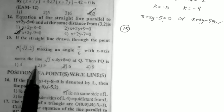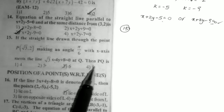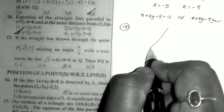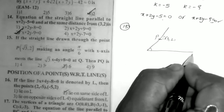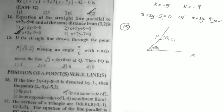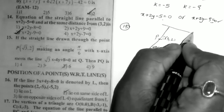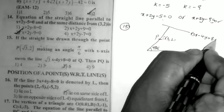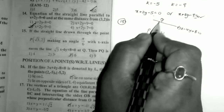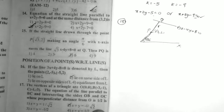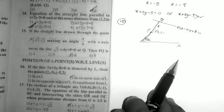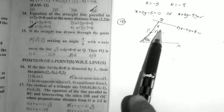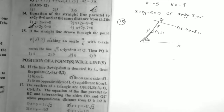Problem 15: A straight line drawn through the point P(√3, 2) makes an angle π/6 with the x-axis and meets the line √3x − 4y + 8 = 0 at point Q. Find the distance PQ. Let the distance PQ = r. The coordinates of Q can be found using the formula: Q = (x1 + r·cosθ, y1 + r·sinθ).